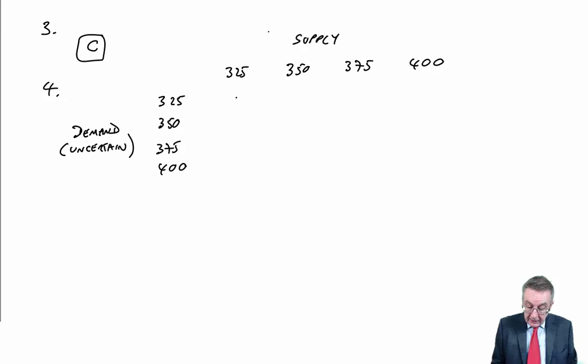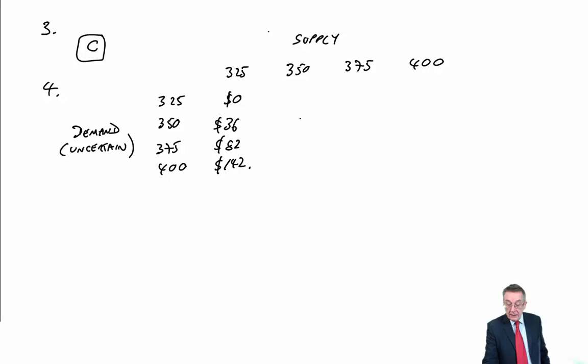With the minimax regret rule, for each choice of action, we say what's the worst that can happen? The worst that can happen, these are regrets, is the maximum regret. If it's 325, the worst is regret of 142. If we supply 350 a day, it's 21, 0, 40, 90, the worst is 90. If it's 375 a day, running down 82, 44, 0, 52, the maximum regret is 82.